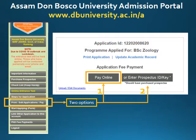Once you click on it, you will see the list of applications that you have applied, and against each application you will see two options for making payment: pay online, and the second option is enter prospectus ID and key.